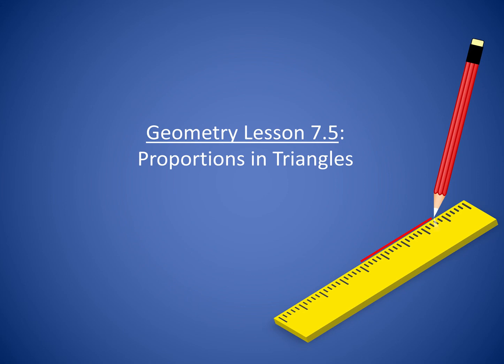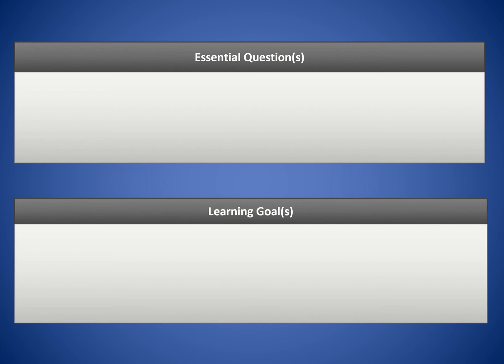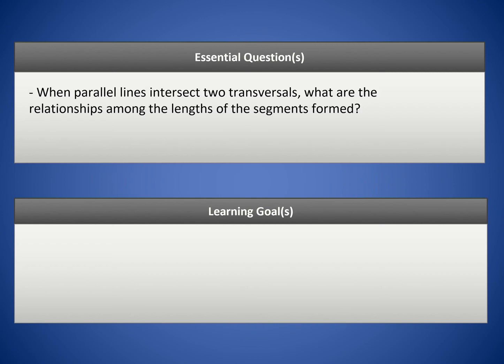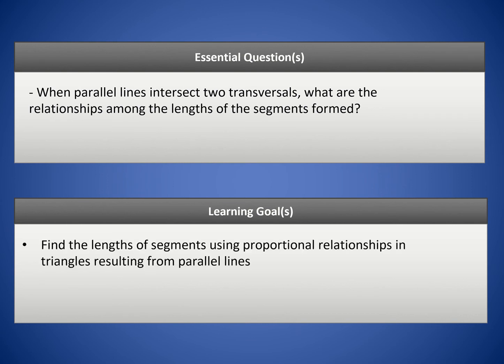Hello class, welcome to Geometry Lesson 7.5, Proportions and Triangles. Our central question today is: when parallel lines intersect two transversals, what are the relationships among the lengths of the segments formed? Our goal is to find the lengths of segments using proportional relationships and triangles resulting from parallel lines.